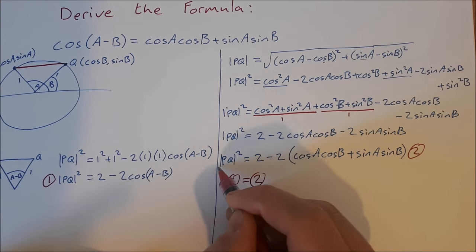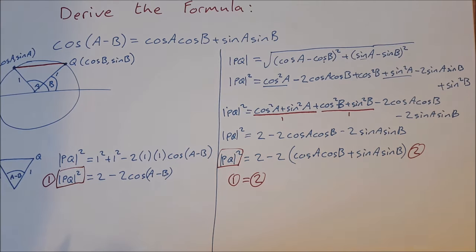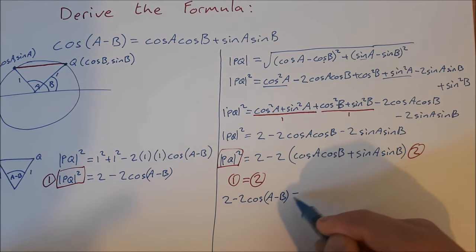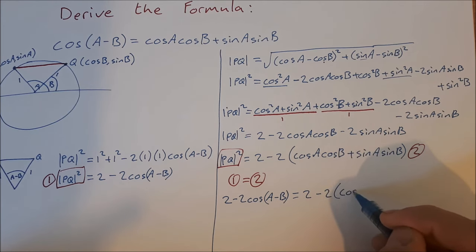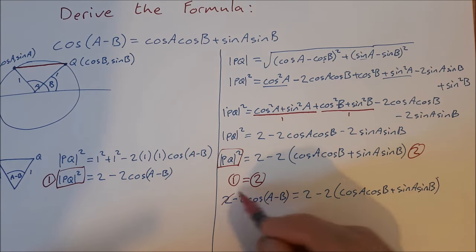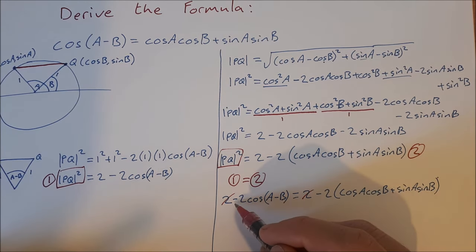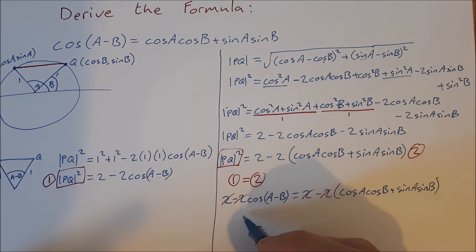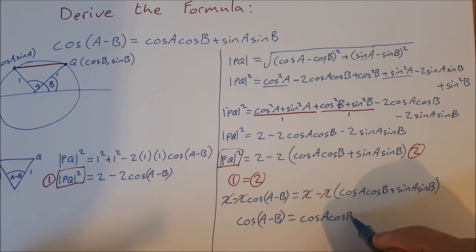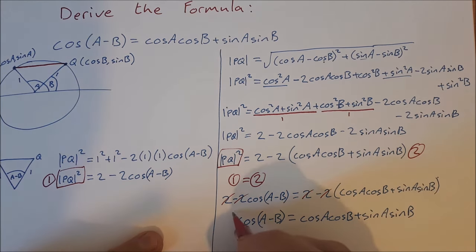Setting Equation 1 equal to Equation 2: 2 - 2cos(a - b) = 2 - 2(cos(a)cos(b) + sin(a)sin(b)). Subtracting 2 from both sides and dividing by -2 gives: cos(a - b) = cos(a)cos(b) + sin(a)sin(b), which is the formula we were asked to derive.